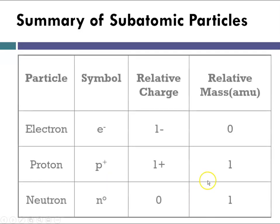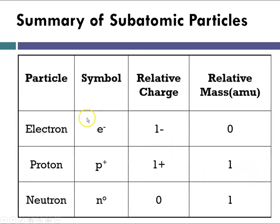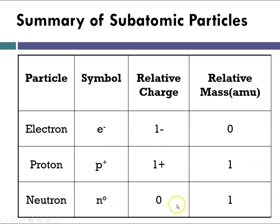A simpler way to summarize: the electron is E minus, charge minus 1, mass 0. The proton is P plus, charge plus 1, relative mass 1. The neutron is N0, charge 0, relative mass 1. That is our summary of the subatomic particles, and we've learned about the discovery of the nucleus today.